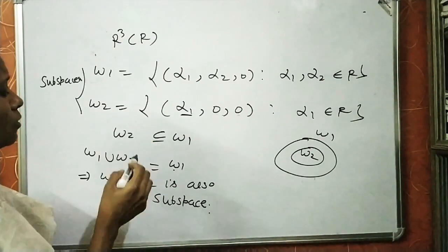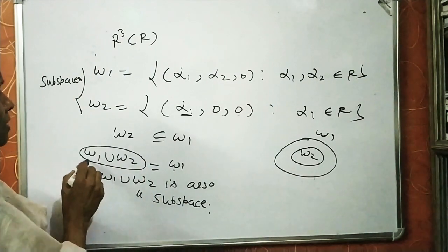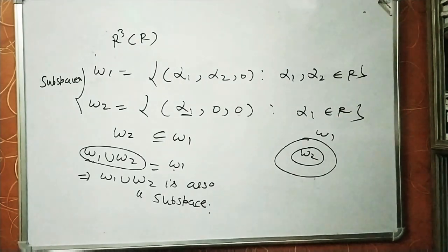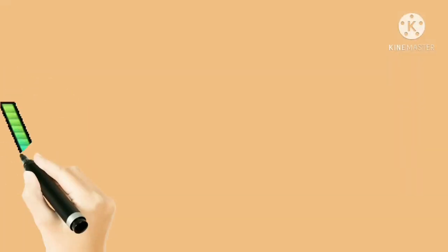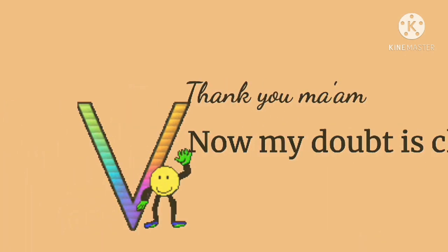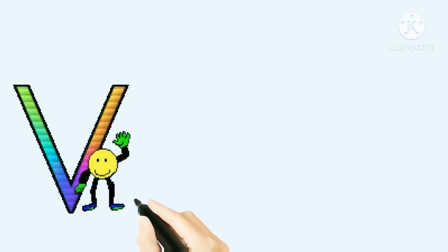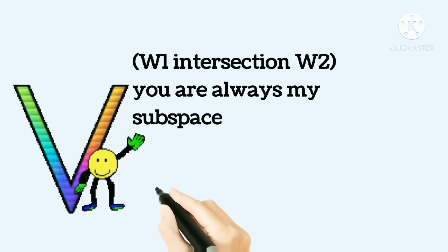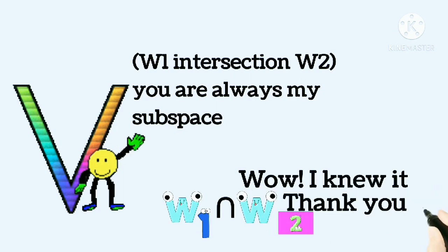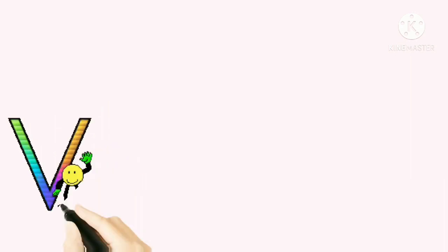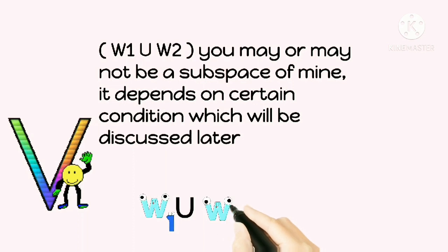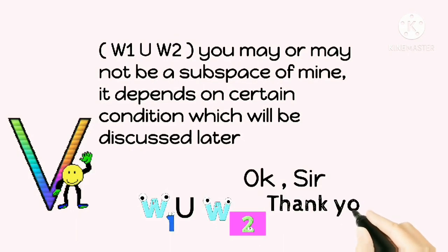Thank you, ma'am. Now my doubt is clear. VectorSpaceVF concludes: W1 intersection W2, you are always a subspace of mine. W1 intersection W2 responds: I knew it — thank you! And to W1 union W2: you may or may not be a subspace of mine; it depends on certain conditions which will be discussed later.